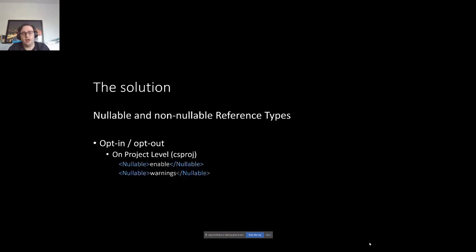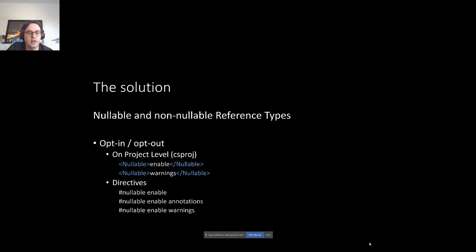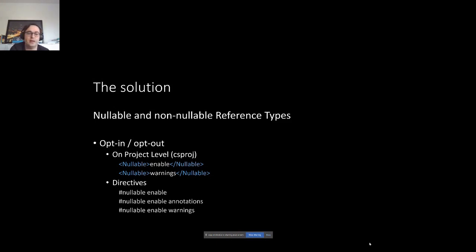How can we opt in? On a project level in the .csproj we can state 'nullable enable', which enables the nullable annotations context. Or you can also just enable the nullable warnings context. You can also use directives in your classes — for the entire class or just for a few lines — to enable or disable nullable annotations or nullable warnings. You can also mix and match these, for example enabling at project level and disabling warnings in a particular class.